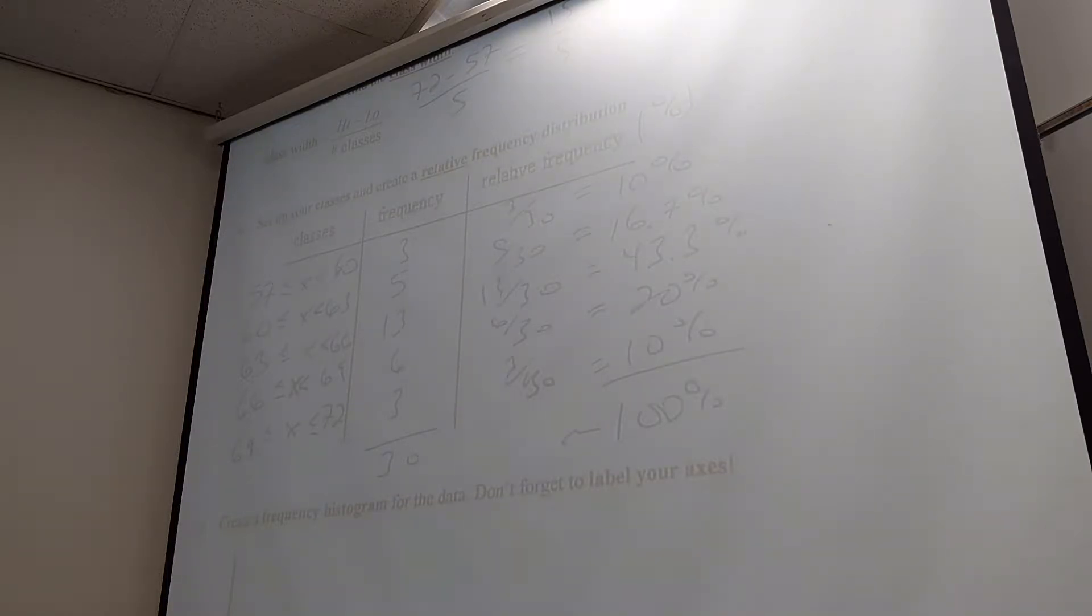13 out of 30? 43.3. 6 out of 30? 20. Good. And 3 out of 30 again? 10. And then you add up to be roughly 100%, right? Or in this case, exactly 100%. All right, how are we doing so far? Depending on how you're rounding. Good so far? Now, what I love about this, I didn't even check this before class.